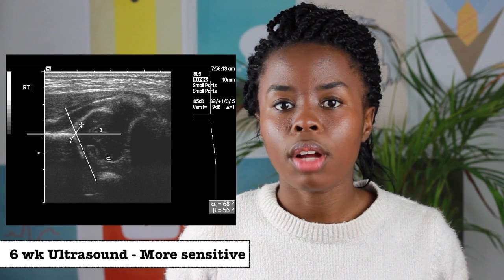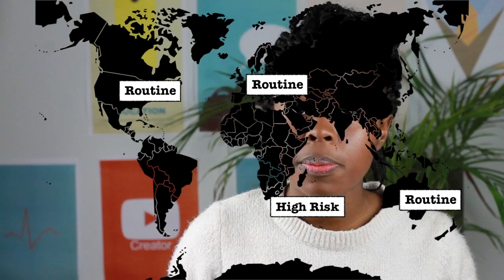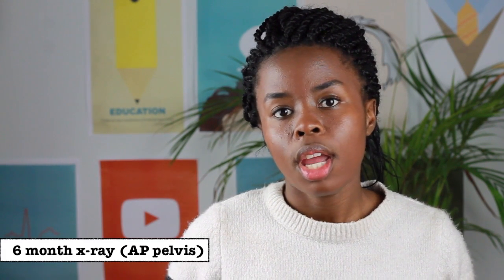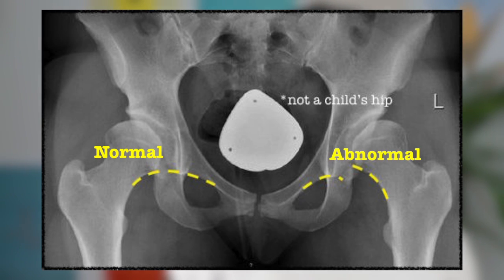A 6-week ultrasound is a more sensitive test and is routinely done in the first world. In South Africa, it's only done in high-risk babies. An AP pelvis x-ray may be done at 6 months. You must look for a break in Shenton's line, which is an imaginary line joining the inferior border of the superior pubic ramus and the inferior medial border of the femoral neck. This line should be smooth and continuous.